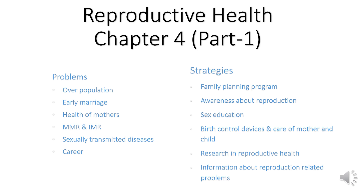Next are maternal mortality rate and infant mortality rate, which occur due to lack of awareness, education, and lack of facilities. Then there are sexually transmitted diseases — children who married early don't have proper knowledge of reproductive organs, so STDs are common among them. Finally, early marriage blocks the career of the couple, especially of the woman. These are the main problems related to reproductive health.